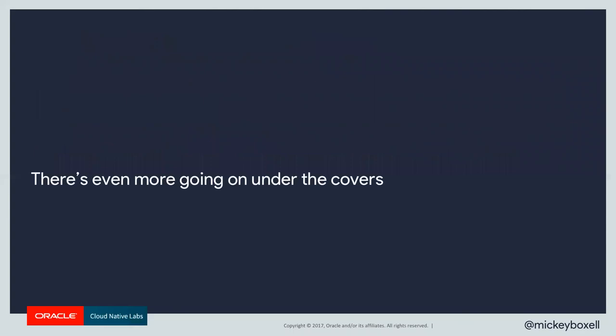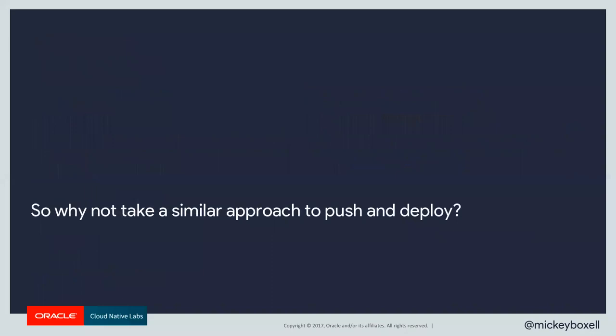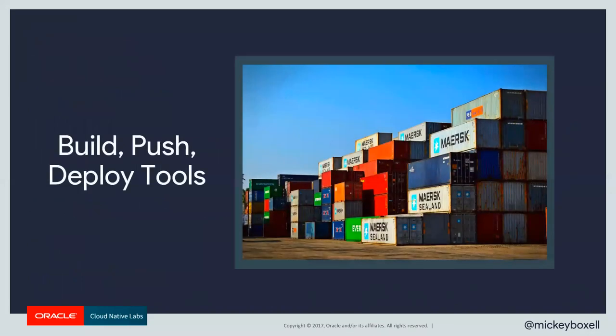We're already including automation and getting rid of a lot of toil by means of Dockerfiles. You're not manually importing an image, packaging it, and running it every time — the entire Dockerfile contents handle it and you don't find yourself typing those commands every single time. Given that's the case, why not take a similar approach to pushing and deploying our application? That brings me to the focus of this talk: build, push, and deploy tools.